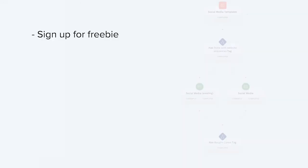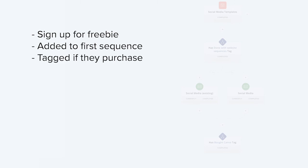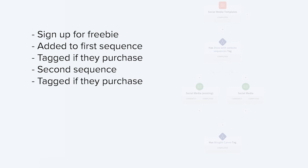To recap the process of this automation: the user signs up for my freebie and is added to their first sequence depending on whether they are an existing subscriber or not. They'll be tagged in ConvertKit if they purchase, then added to a second sequence — different depending on whether they purchased or not. If they do purchase, they'll be tagged. If they did not purchase, they'll be sent a final sequence.